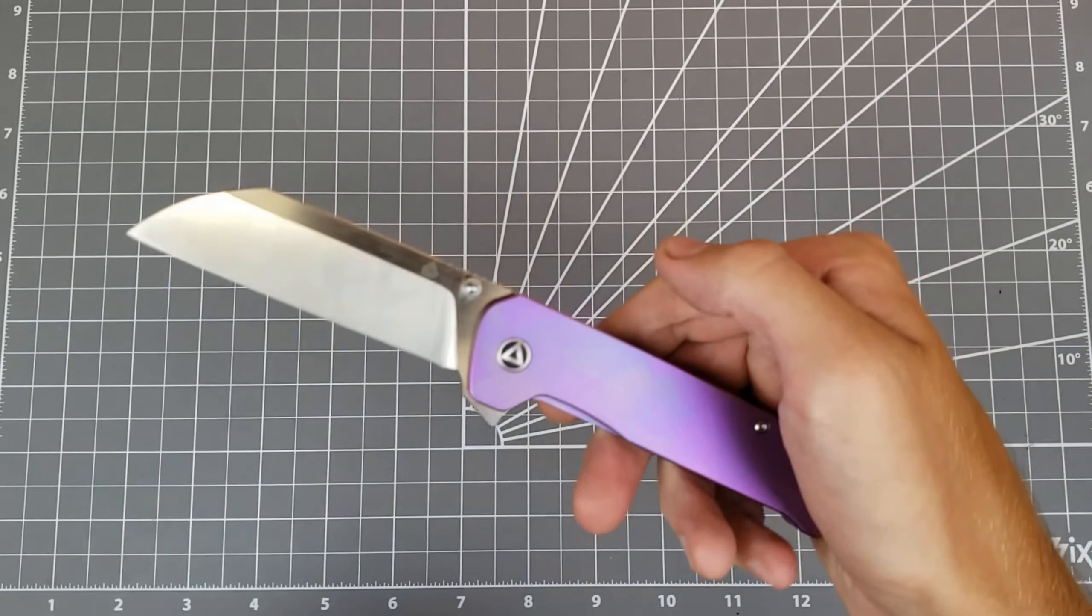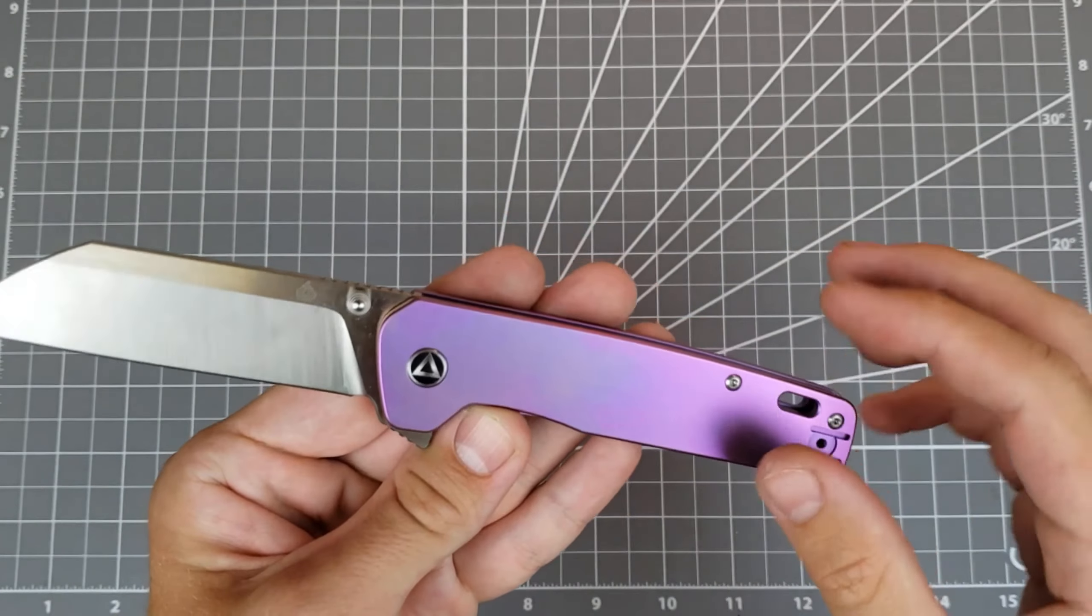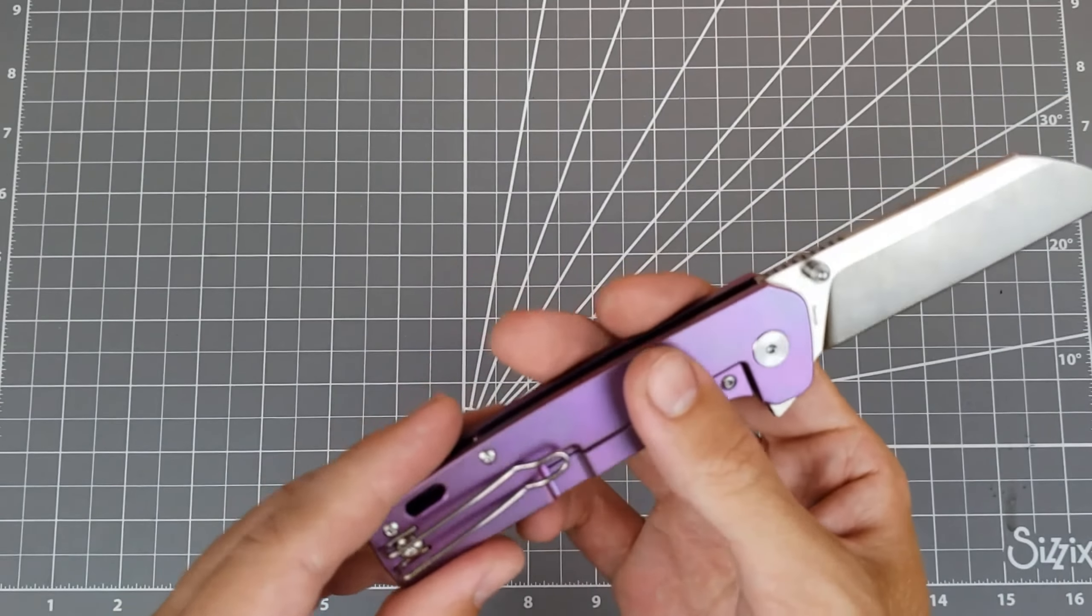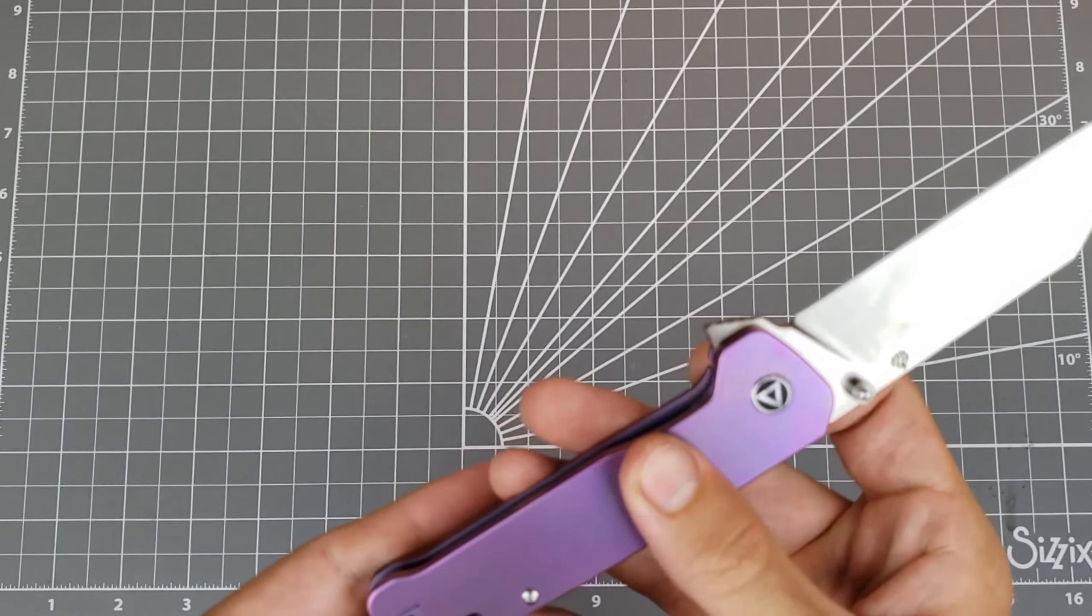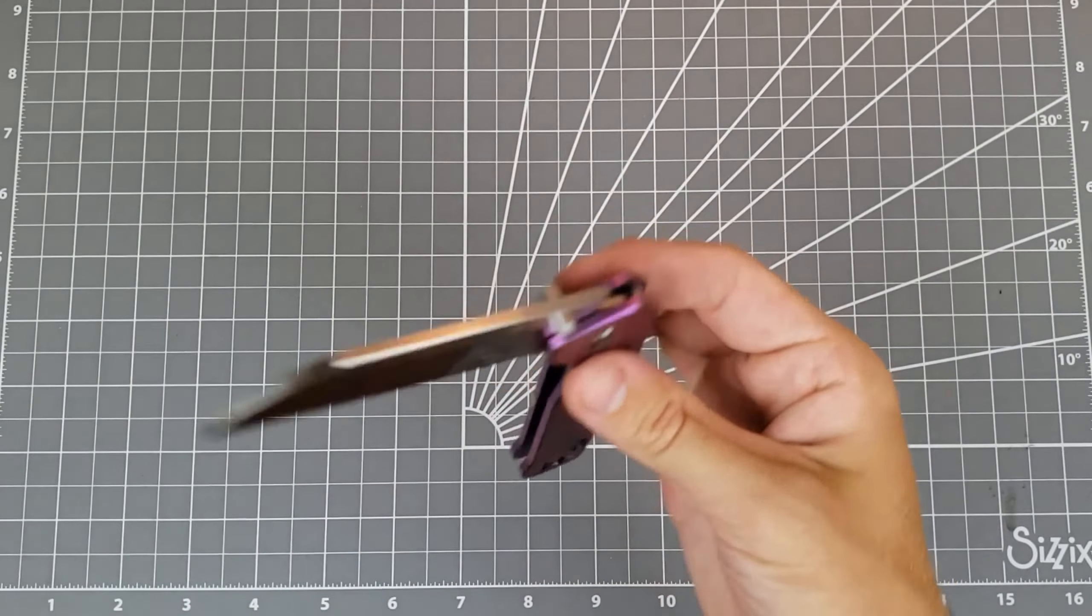So there we go. That's about all I have to say. And this purple anodization, I really like it. I think this purple looks super nice. Well done. Very even. And the handles feel nice. Have this nice, smooth, blasted finish. I'm into it. I like it.